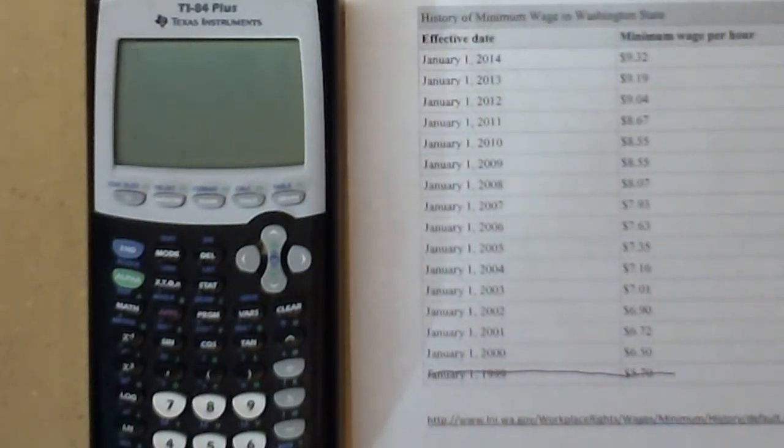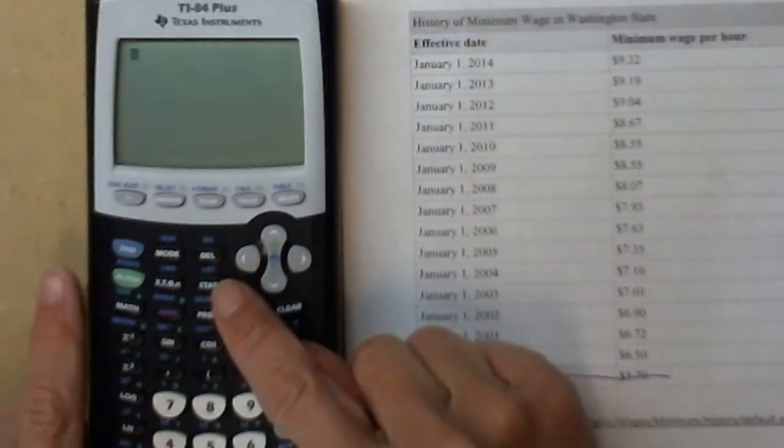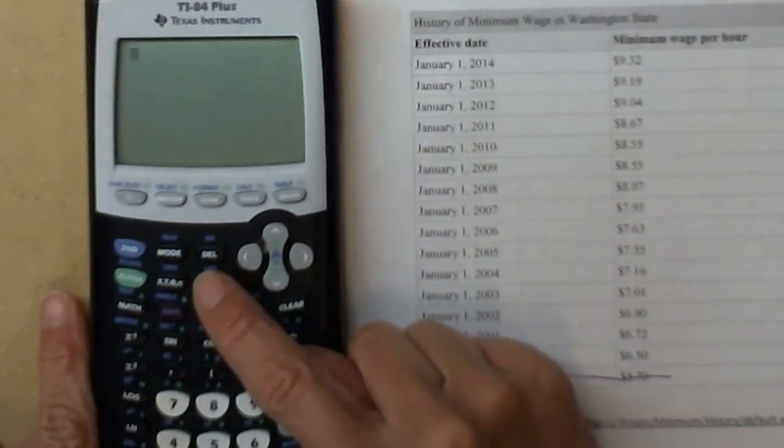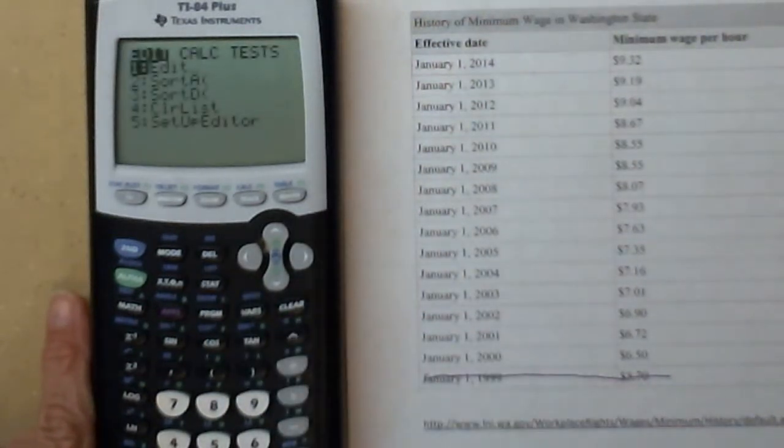The first thing I need to do is input all of this data. Since I have two variables going on, I have a year and a minimum wage, I need two columns, two sets of data. Even if you have a different version of a calculator, it probably has a statistics menu on it somewhere.